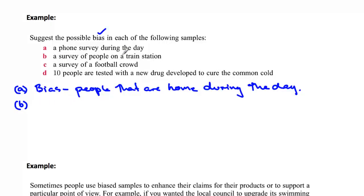What about a survey of people on a train station? What would be the bias here? All of these have got some form of bias, and that would be clearly people who catch other forms of transport would be left out.